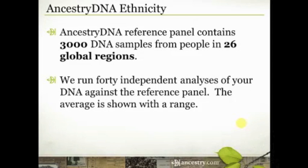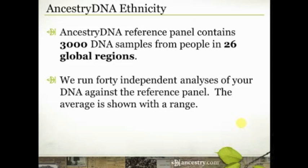We've also changed the way that we compare your DNA to that reference panel. We now run 40 independent analyses of your DNA against that reference panel. What you're seeing on your DNA results for ethnicity is actually an average of those 40 independently run tests, and we also show you the range.